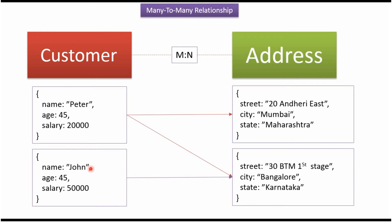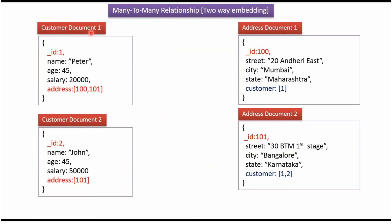Now we will see how to establish a many-to-many relationship using two-way embedding. Here you can see customer document 1 and customer document 2 — both will be in the customer collection. Here you can see address document 1 and address document 2 — both will be in the address collection. Customer Peter belongs to two addresses, so I have put an address array with the primary key of address 1 and the primary key of address 2. Customer John belongs to only one address, which is 101, related to Bangalore. So the address array has 101, which is the primary key of address document 2.